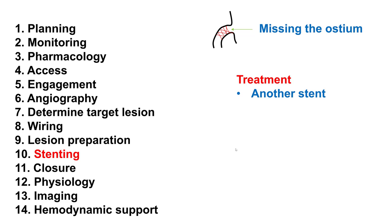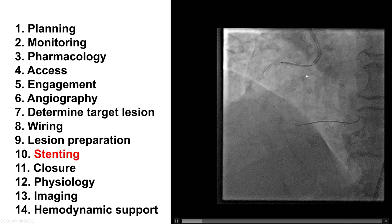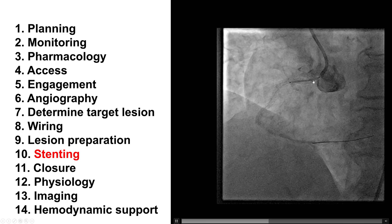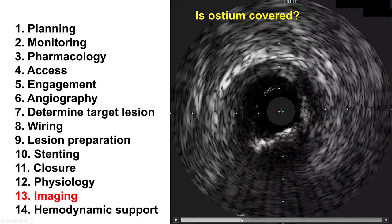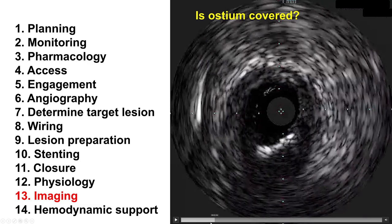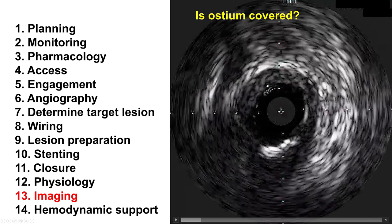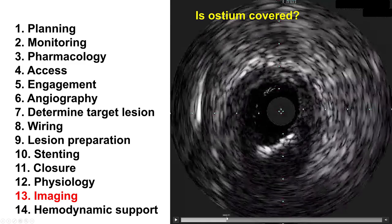This is an example of a case in which the stent is placed into the osteal RCA lesion. You can see the guide being disengaged and there is injection — the stent appears to be going all the way into the aorta. But then, once IVUS is done — and IVUS is extremely useful for confirming both that the stent is well expanded and that it covers the ostium — we can see on IVUS that there is the stent, but as we move toward the ostium, this part of the vessel does not have a stent. So the stent actually missed the ostium. IVUS is the best way to determine that.